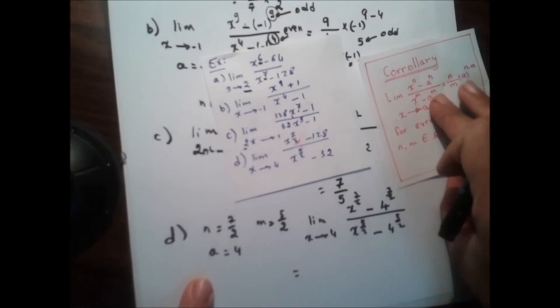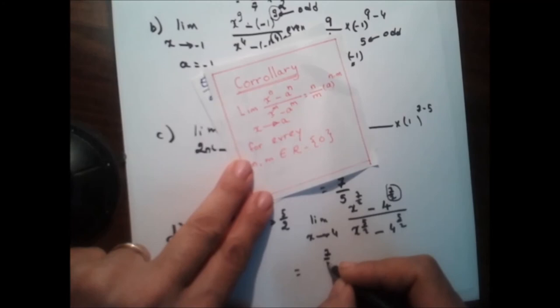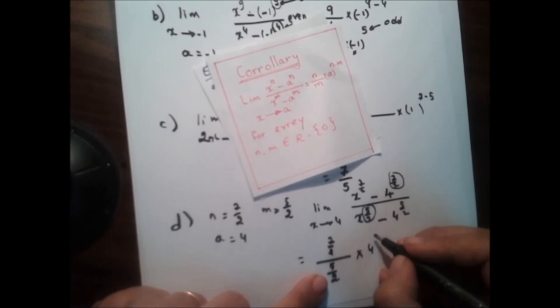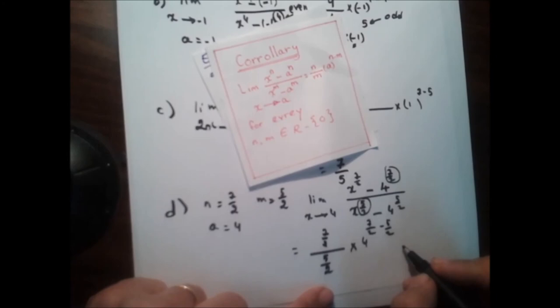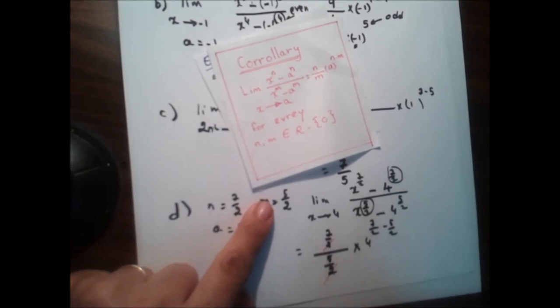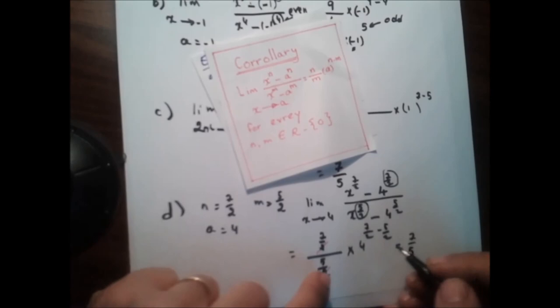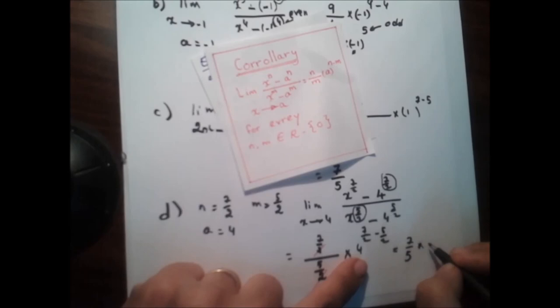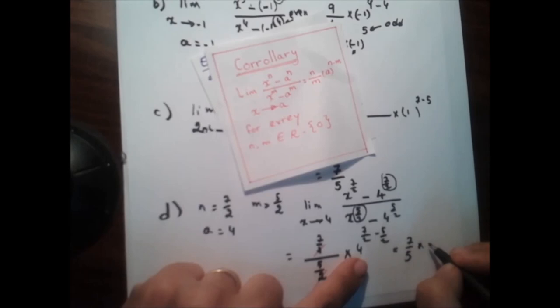Now we can use the corollary. This equals n over m times a to the power of n minus m, which is (7/2) over (5/2) times 4 to the power of (7/2 minus 5/2). We simplify: (7/2) divided by (5/2) gives 7 over 5. And 7/2 minus 5/2, having the same denominator, equals 2/2 which is 1. So this equals 7 over 5 times 4 to the power of 1, which is 4. Therefore 7 times 4 equals 28, and the final answer is 28 over 5.